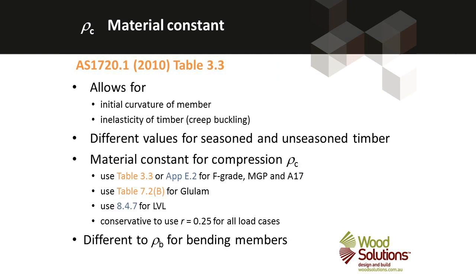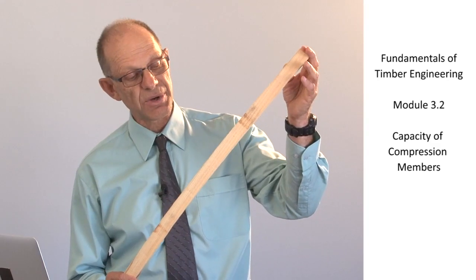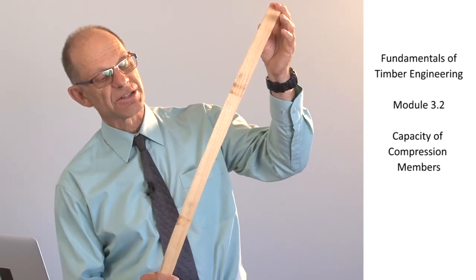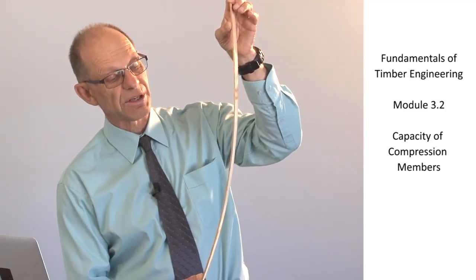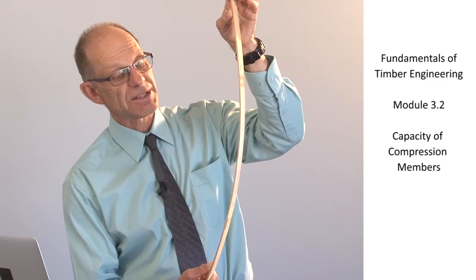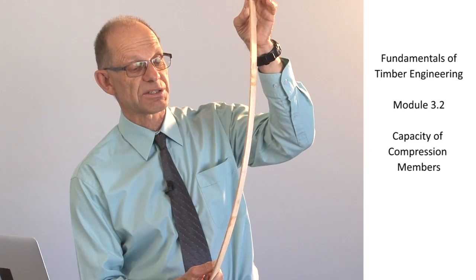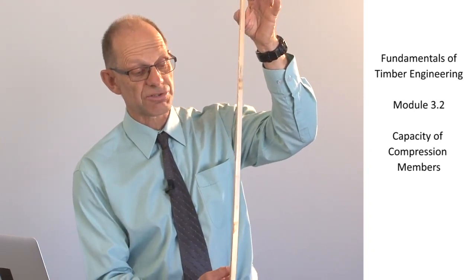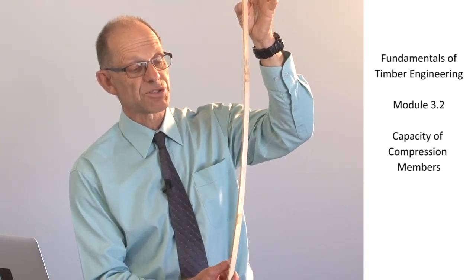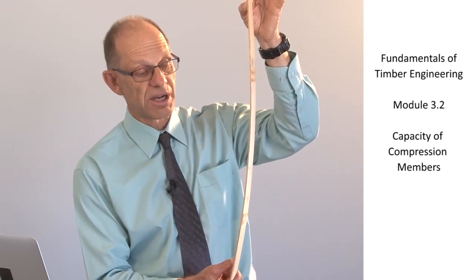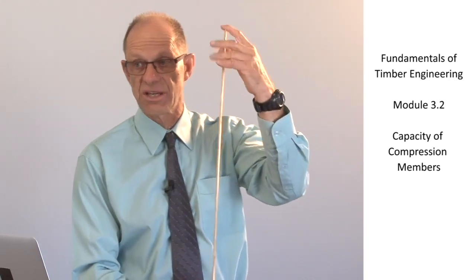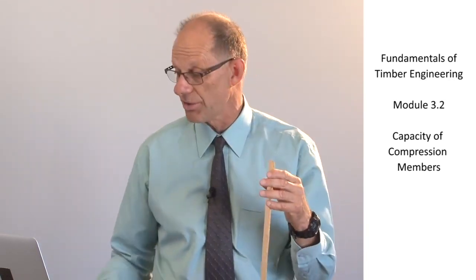The material constant is similar to that for a bending member — a function of the inelastic behaviour of timber. Timber does creep under load, so if we have some deflected shape of the member and the load is maintained for a long period of time, it's going to tend to creep under that deflected shape and the buckling will be accentuated. The material constant also reflects the initial straightness of the member, as members with higher initial curvature are more prone to buckling.